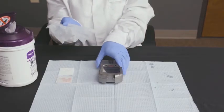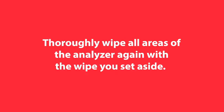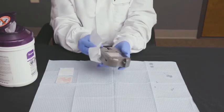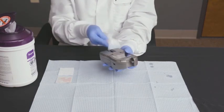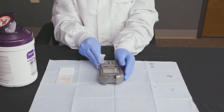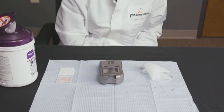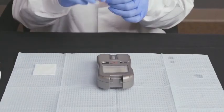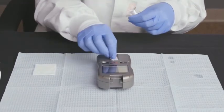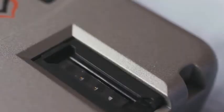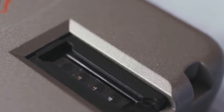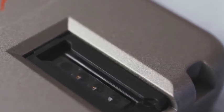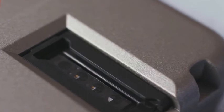Then disinfect the analyzer. Thoroughly wipe all areas of the analyzer again with the wipe you set aside. Keep the surfaces of the analyzer damp with disinfectant for two minutes — this is long enough to kill blood-borne pathogens. Once the necessary disinfectant contact time is up, allow the device to air dry completely. Clean the optical glass with an alcohol wipe to remove any residue left behind by the disinfectant, then dry with gauze. Inspect the optical glass at different angles to make sure it is clean before running your next test or placing the analyzer in the case.